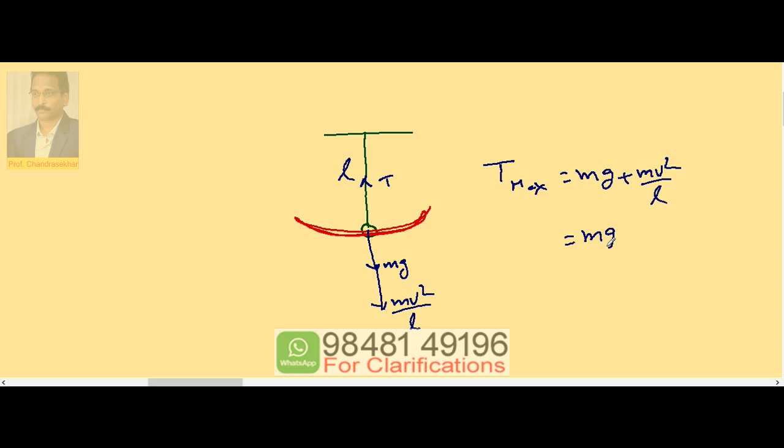Now this is mg plus M by L times. We know that V is equal to A omega because at the mean position velocity is always maximum which is equal to A omega.